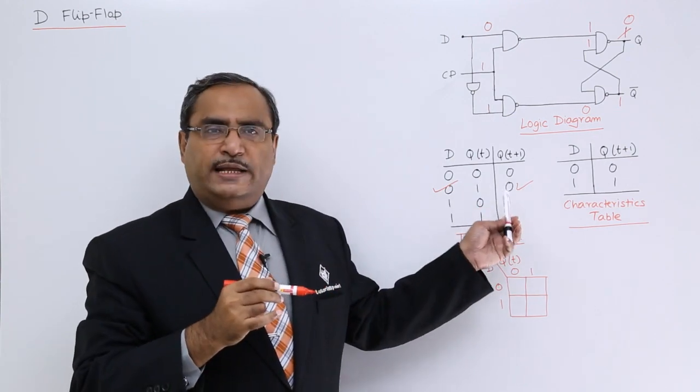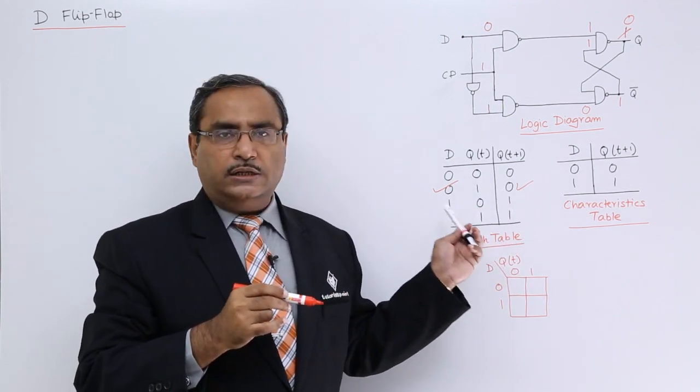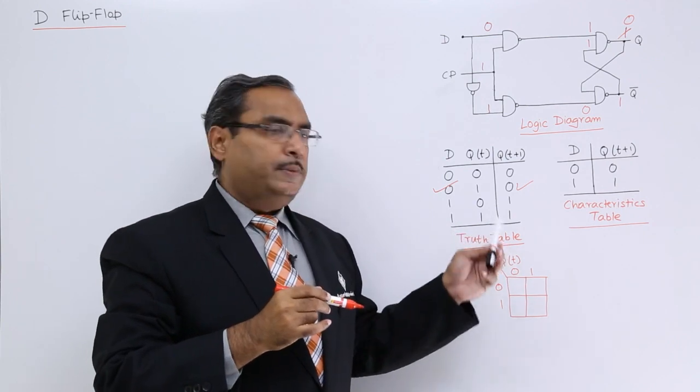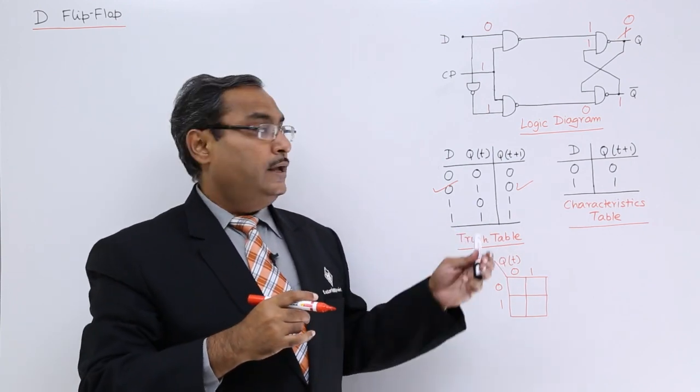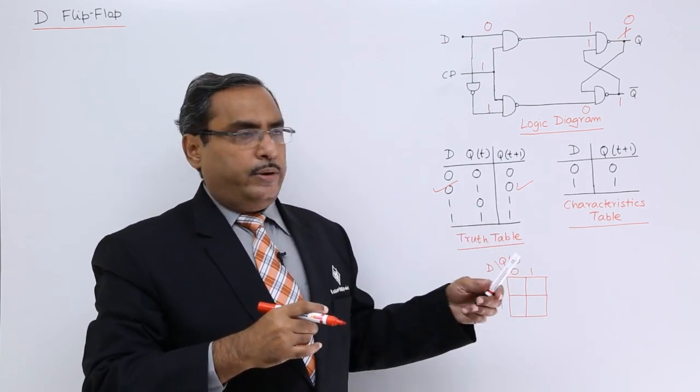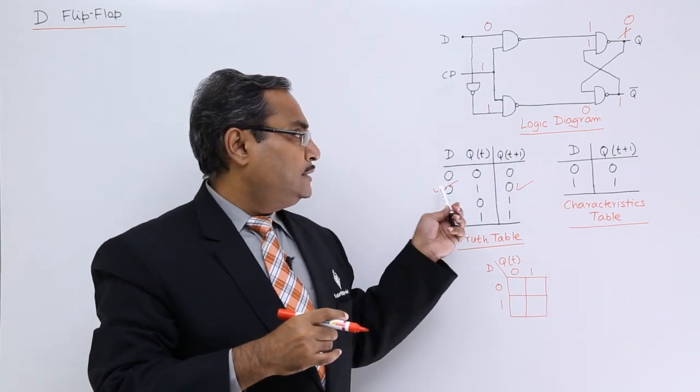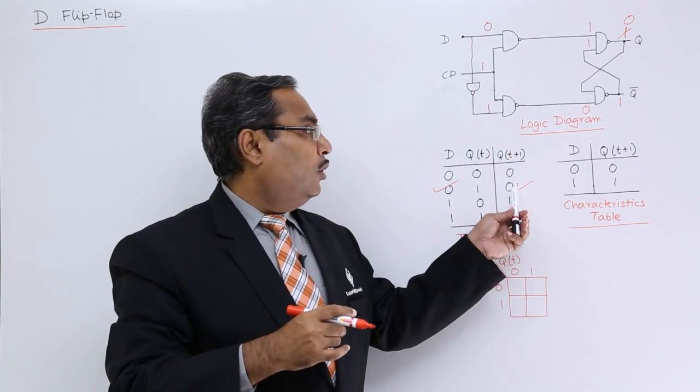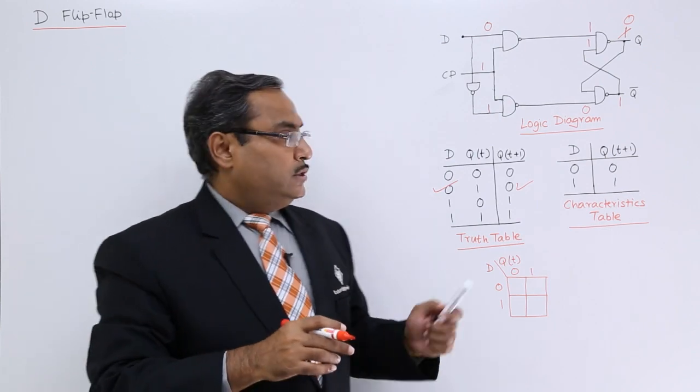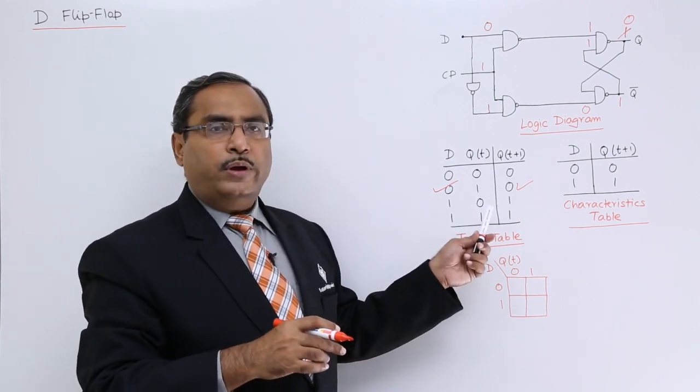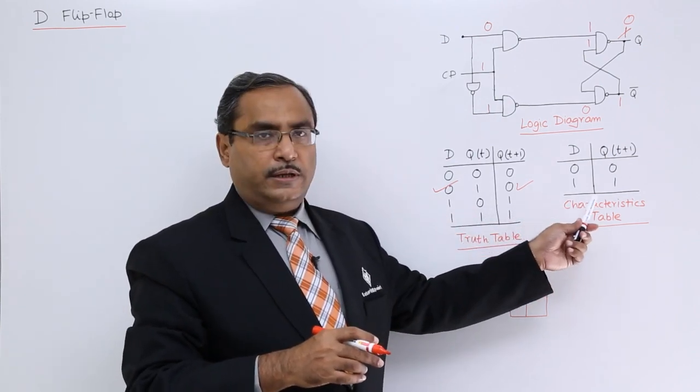In this way, if you test with the other combinations, other rows of this truth table, you can find that they are working. Apply them at your end as I have shown for this input combination and I got the correct output as well. Now from this truth table, we are going to have our characteristic table here.